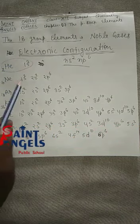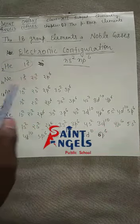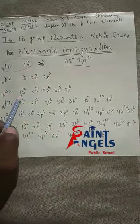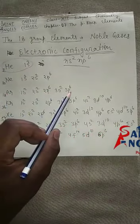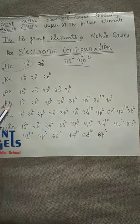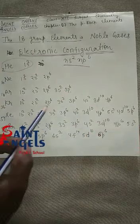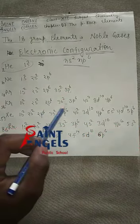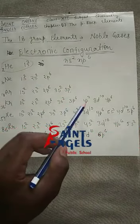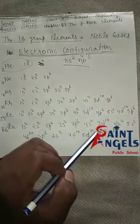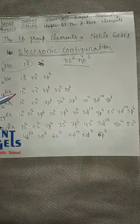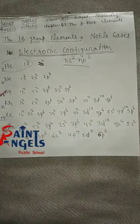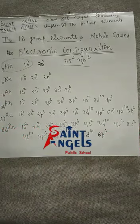Neon: 1s2, 2s2, 2p6. Argon: 1s2, 2s2, 2p6, 3s2, 3p6. Krypton: 1s2, 2s2, 2p6, 3s2, 3p6, 3d10, 4s2, 4p6. So these are the electronic configurations of the Group 18 elements.